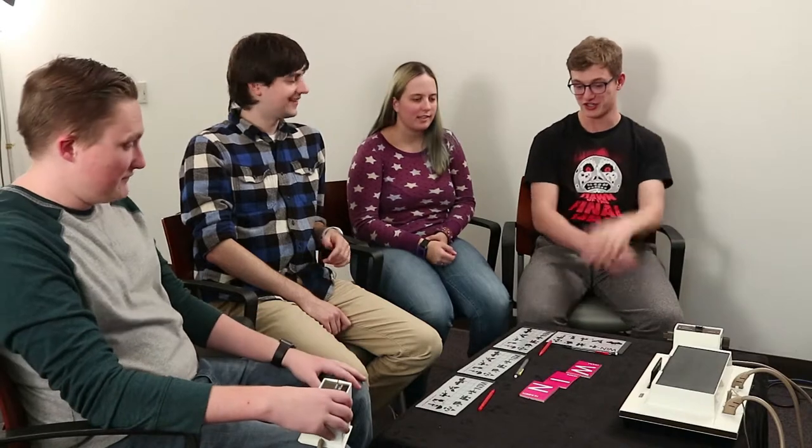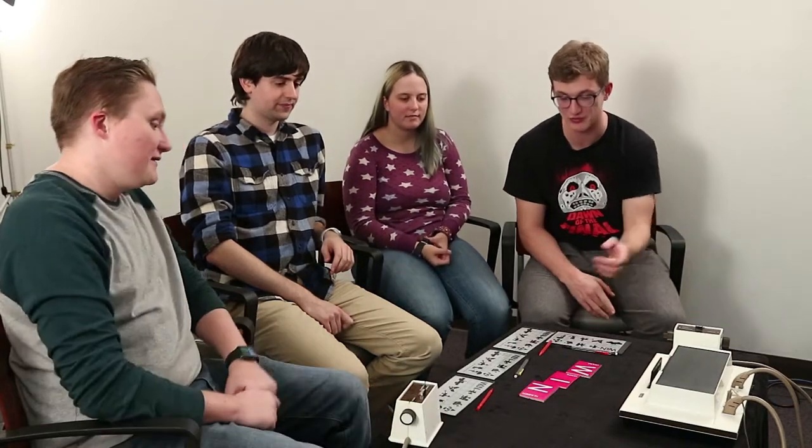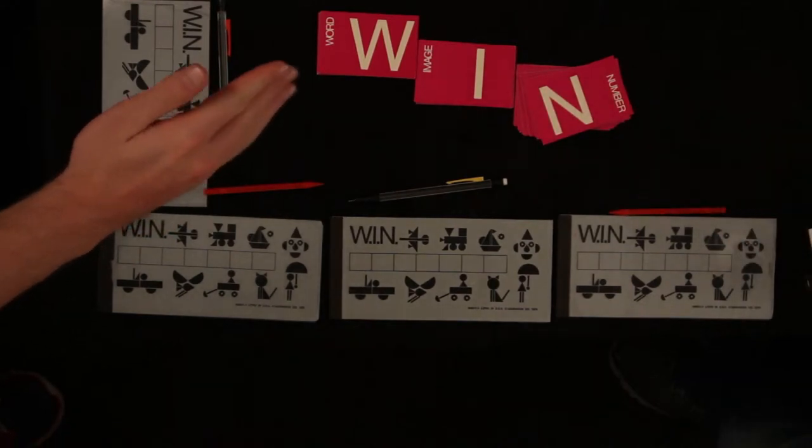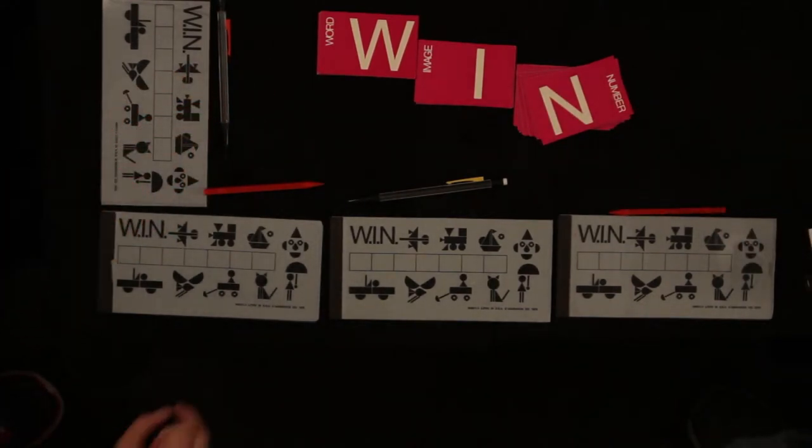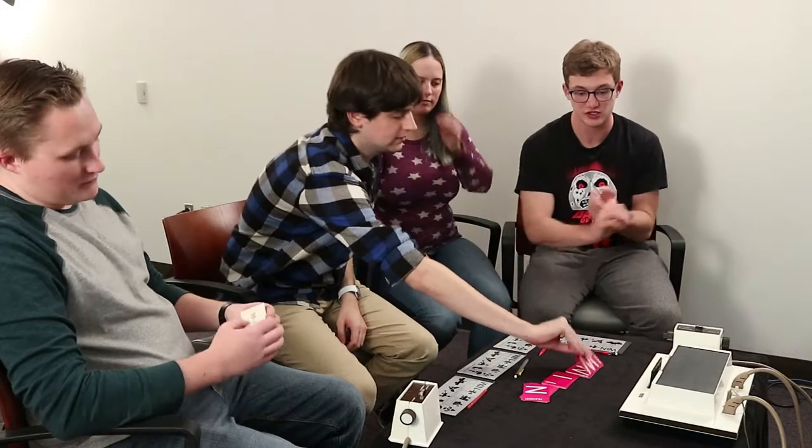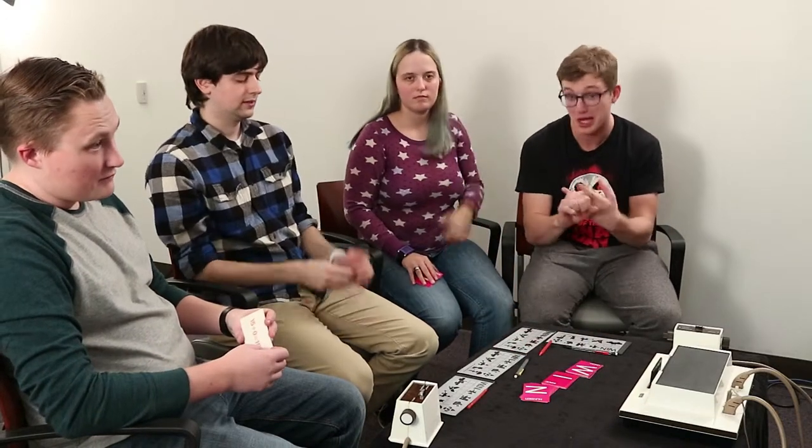Alright. So the first thing we're going to do is everyone's going to draw either a W, an I, or an N card. W being word, I being image, and N being number. The point of the game is to successfully spell your word, compile your number, and image, so that you get the card. And once you get W-I-N, you win. Easy as that.